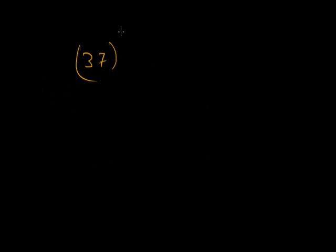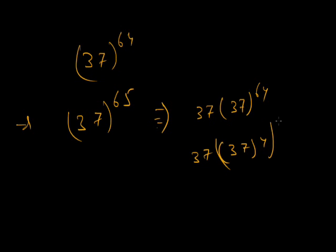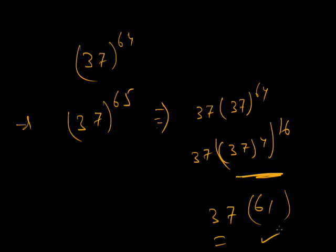We solved 37^64. Now what if the problem is 37^65? Since 4 does not divide 65, split it as 37 × 37^64. We already know 37^64 ends in 61. Multiply 61 by 37: the last two digits of 61 × 37 give the answer. This is the general approach. I hope you can now solve all kinds of last-two-digit problems. Thank you, have a nice day.